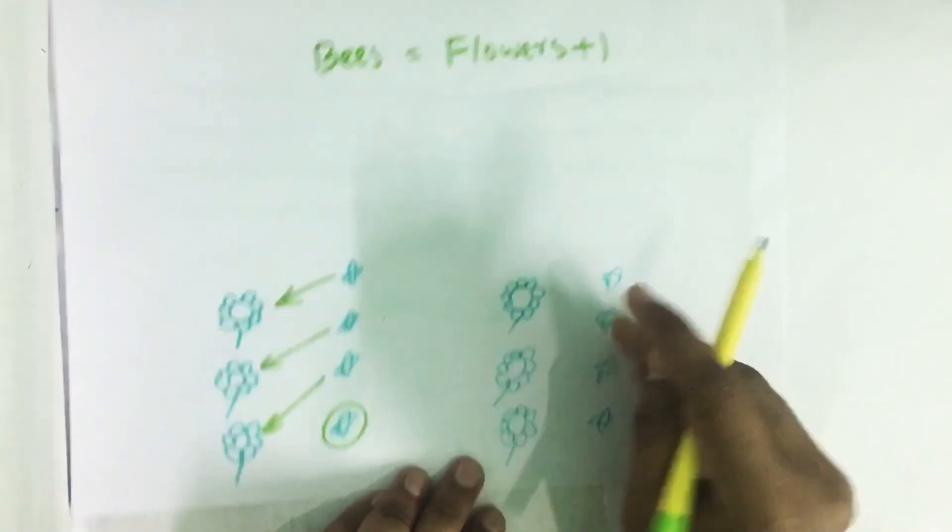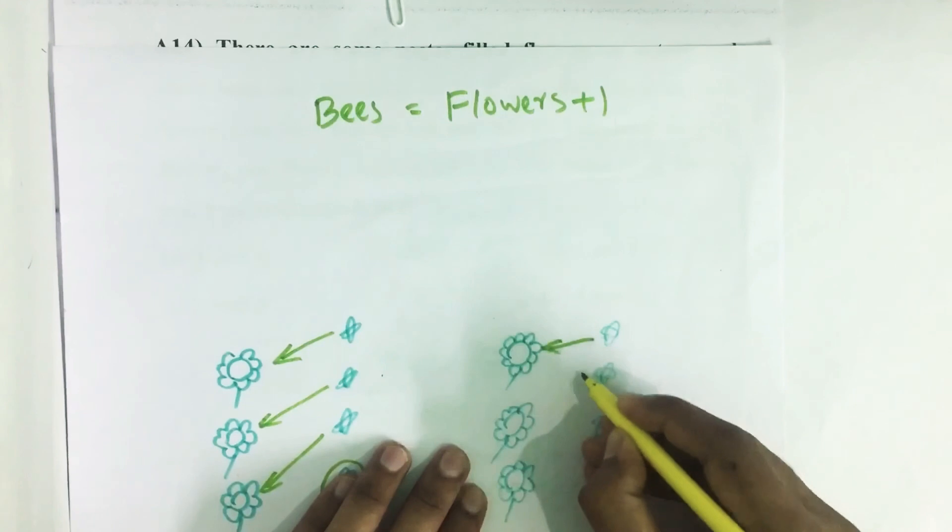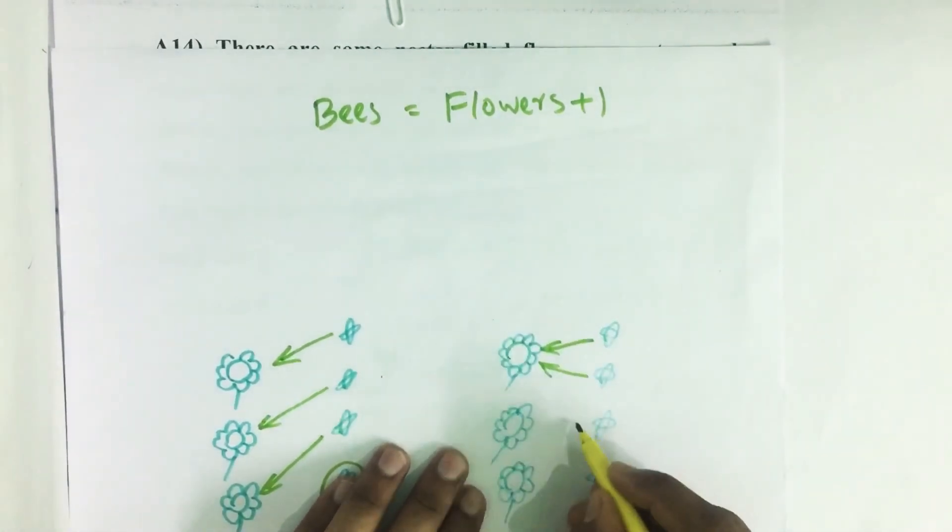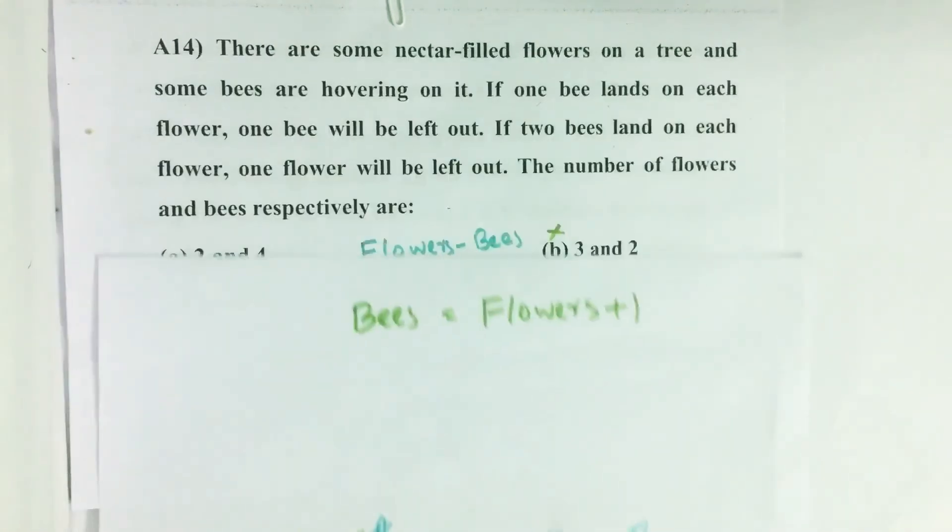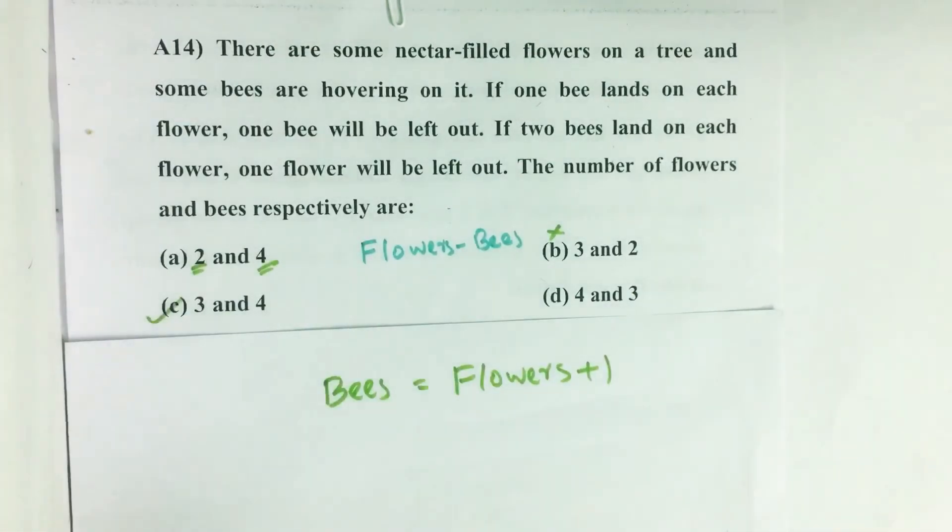So if two bees are landing on each flower, then one flower will be left out. So our answer is option C, three and four.